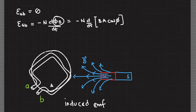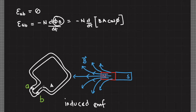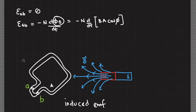If this conducting loop is a closed loop — for example, if I connect points A and B with a wire — then during the motion of this magnet towards or away from the loop, since there will be an induced EMF, there will also be an induced current since charges can now flow through the loop. The question is: what is the direction of this induced current?